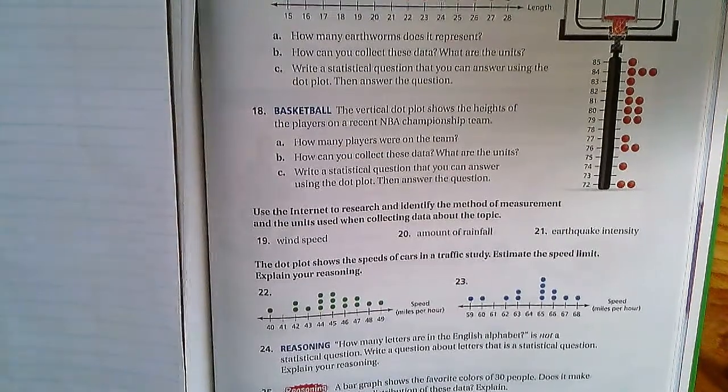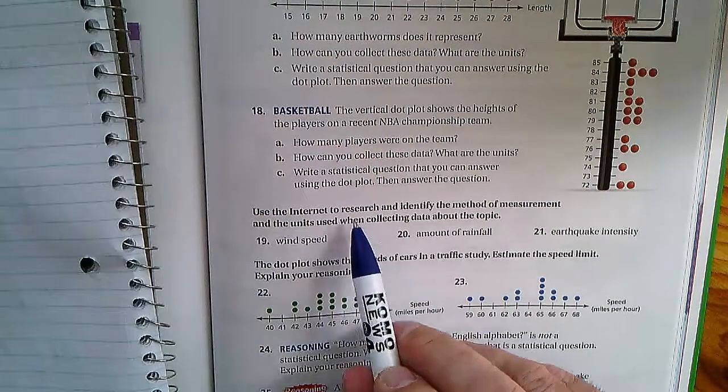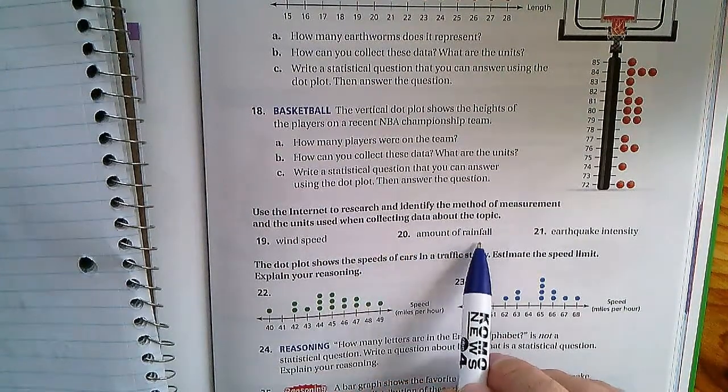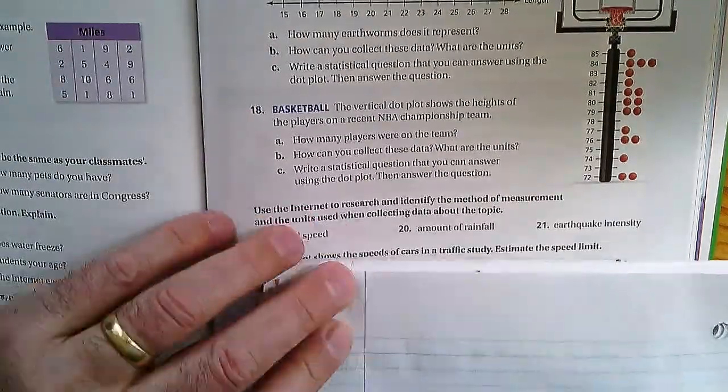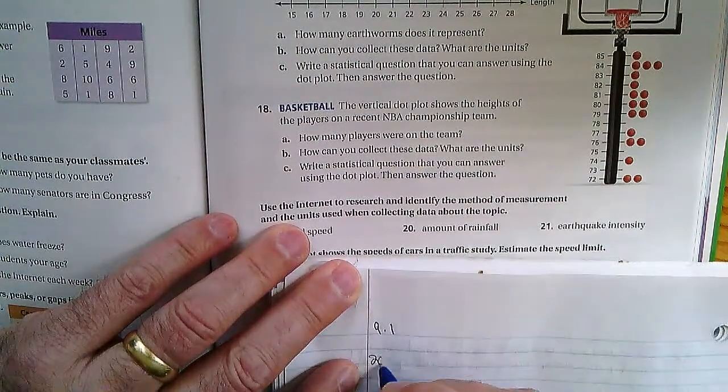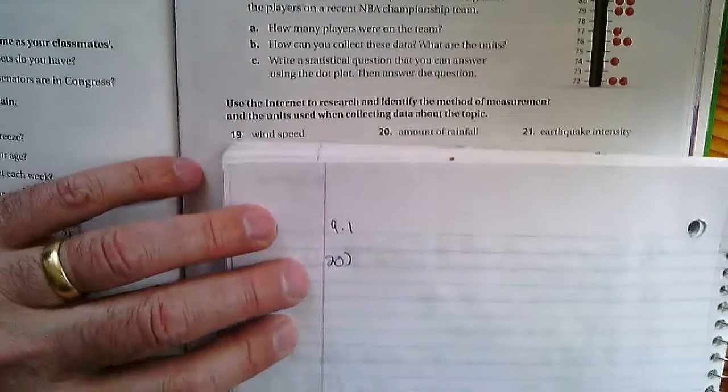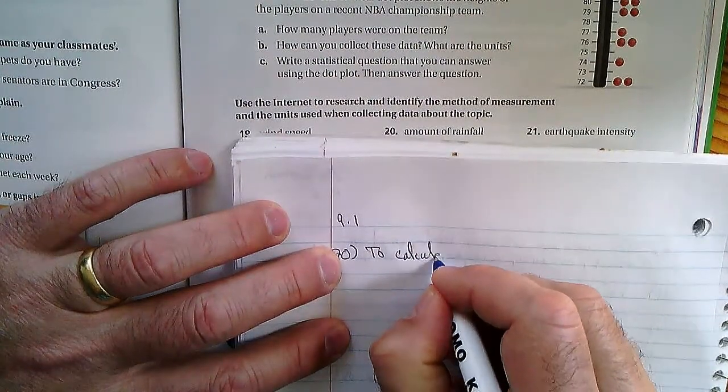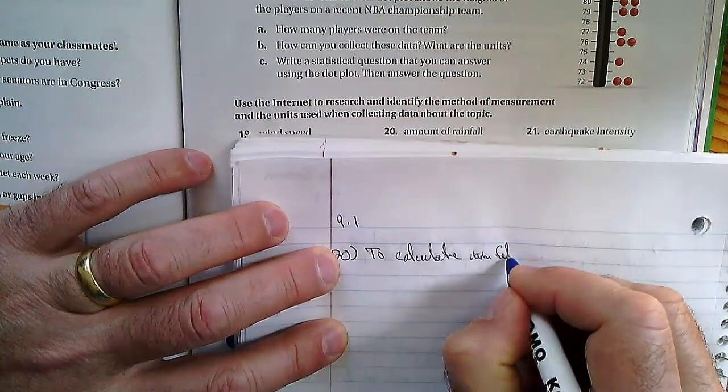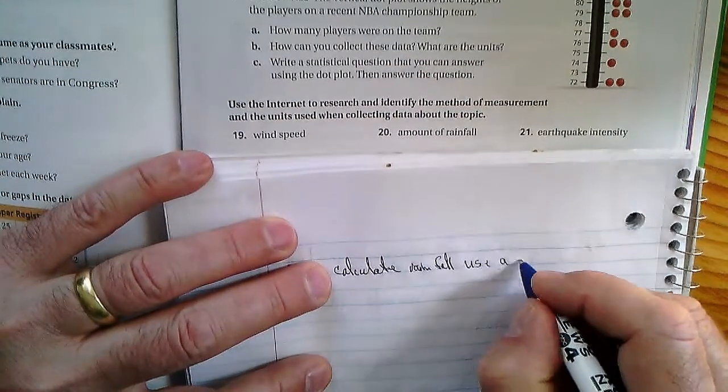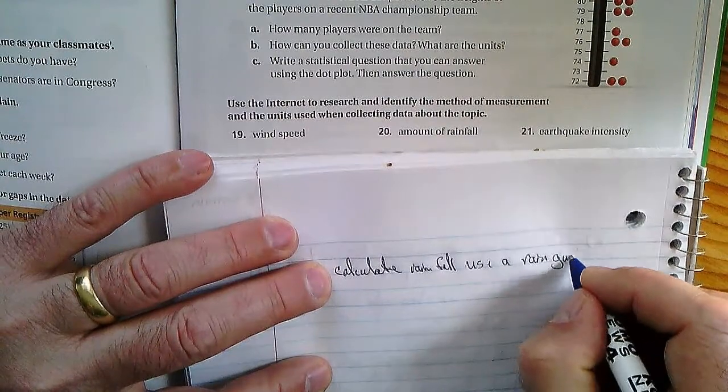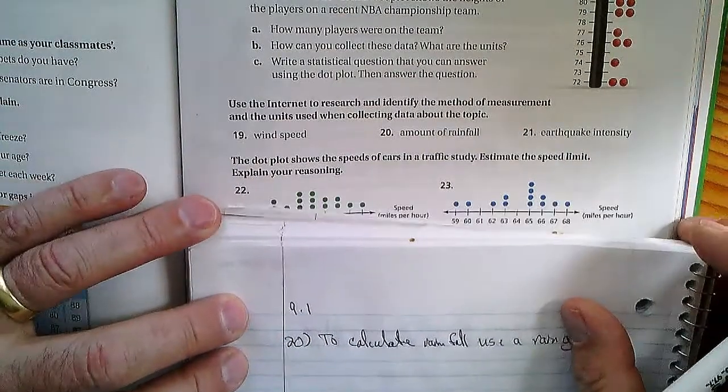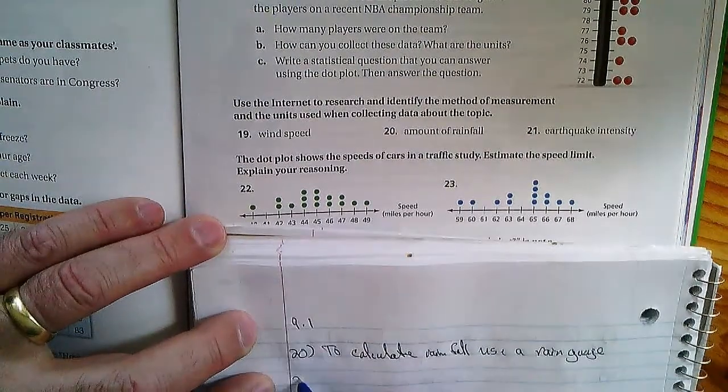Question number 20: use the internet to research and identify the method of measurement and units used when collecting data about the topic. There's only one of these questions. How would you figure out the amount of rainfall? To calculate rainfall, use a rain gauge. You just have a cup that has a cylinder - it's a cylinder that collects water and then you can see how much rain. We didn't need the internet for that.